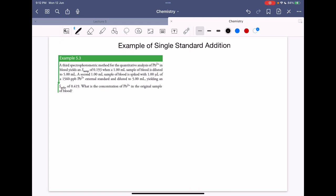So we're going to write it down. S sample is 0.193.